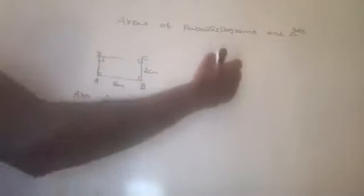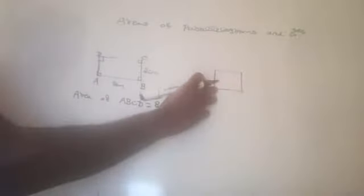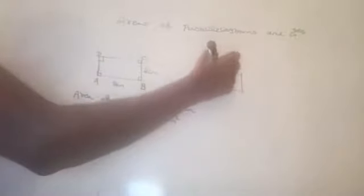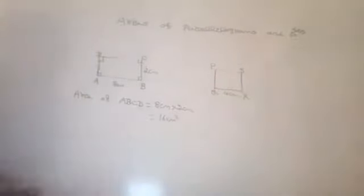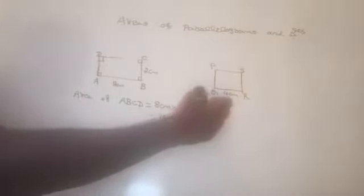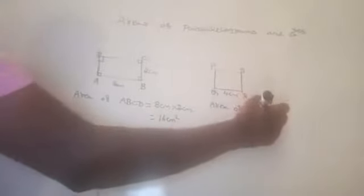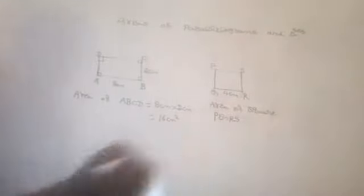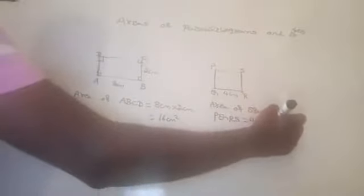Now consider a square PQRS whose side is 4 centimetres. The area of the square PQRS is side into side, which is 4 centimetres into 4 centimetres, equal to 16 centimetre square.